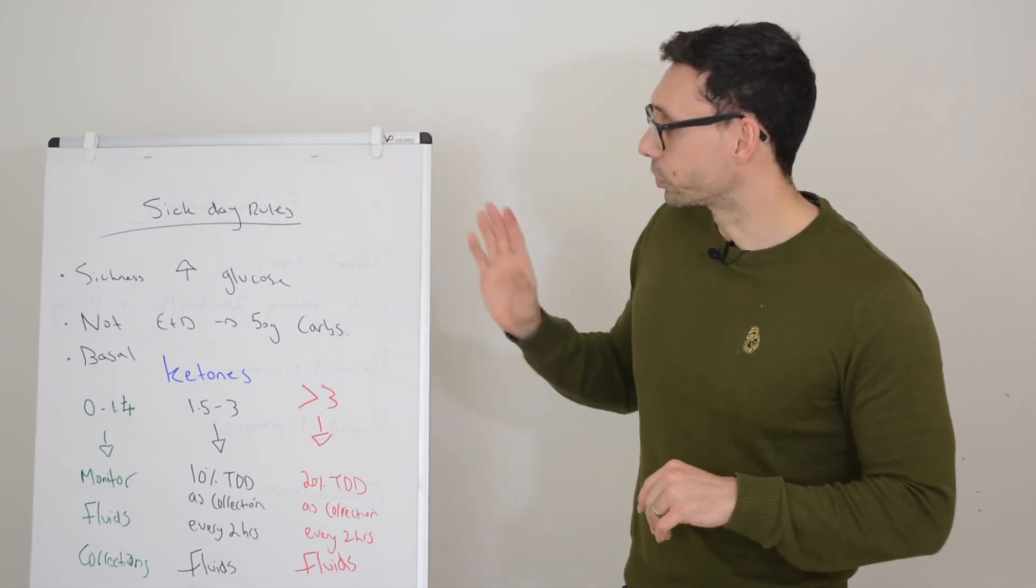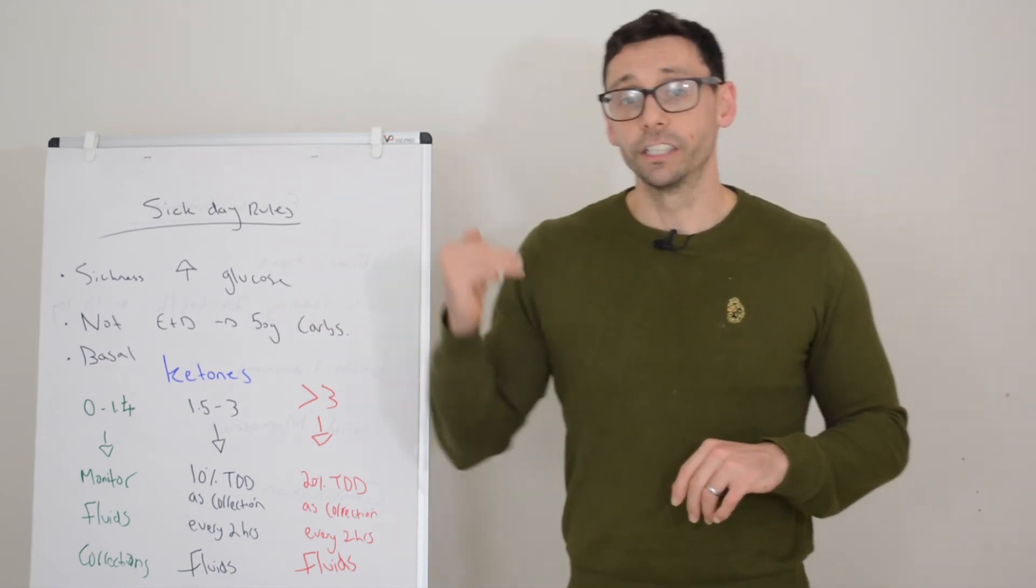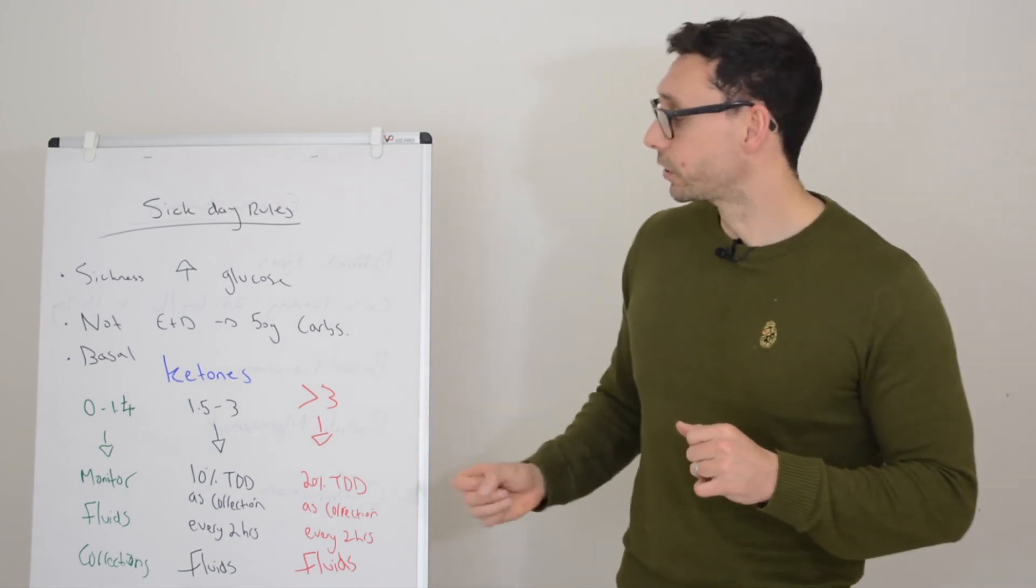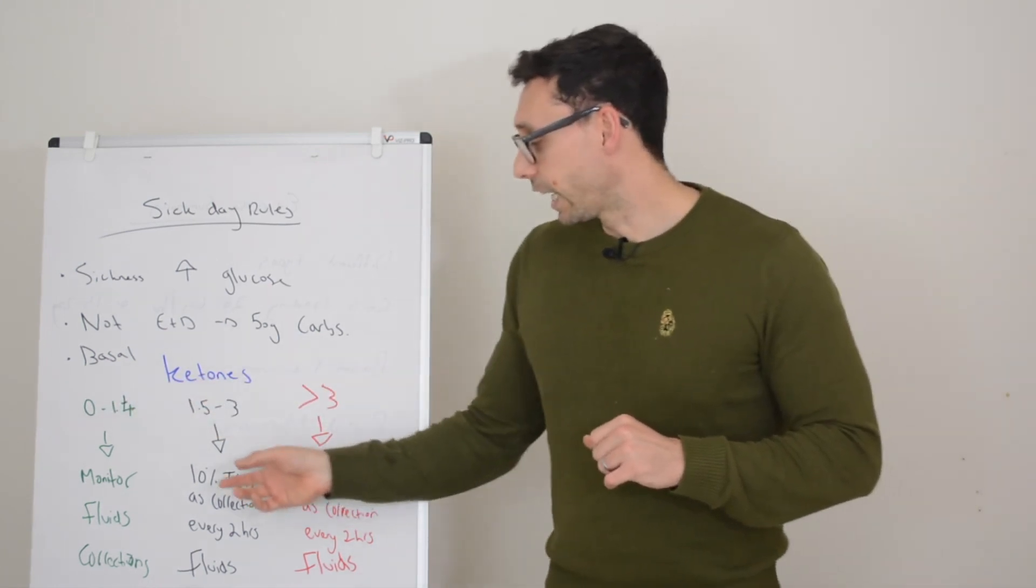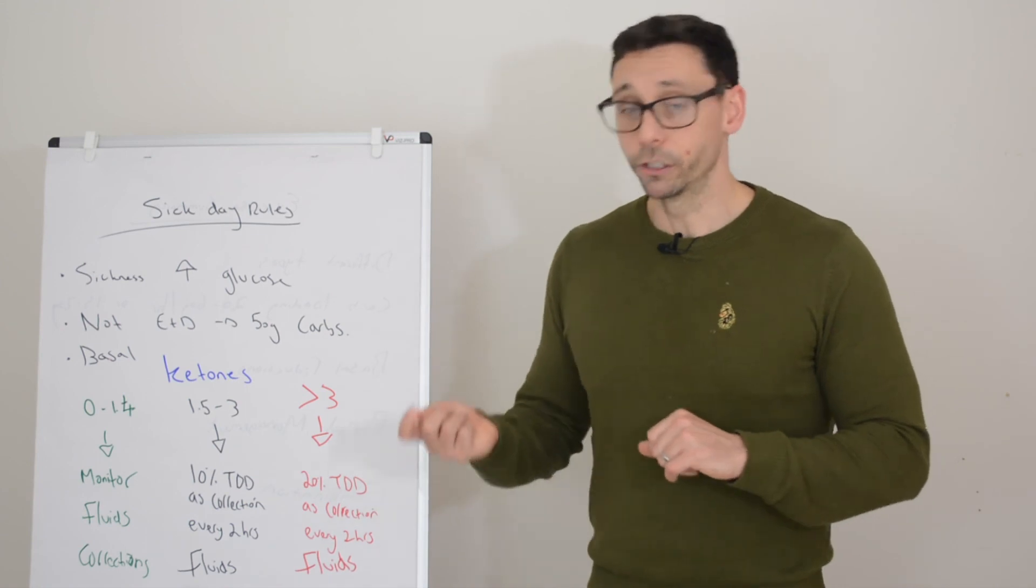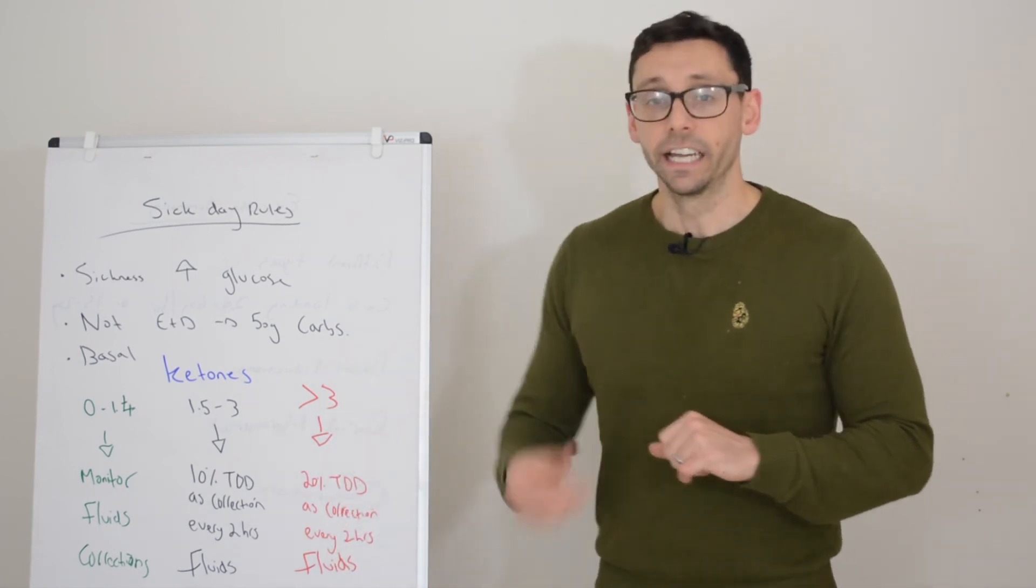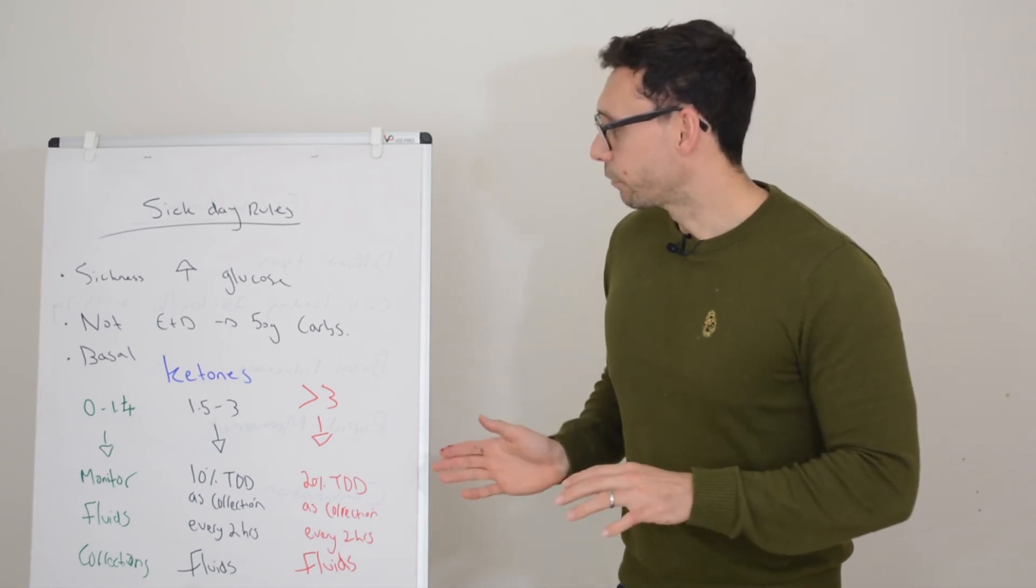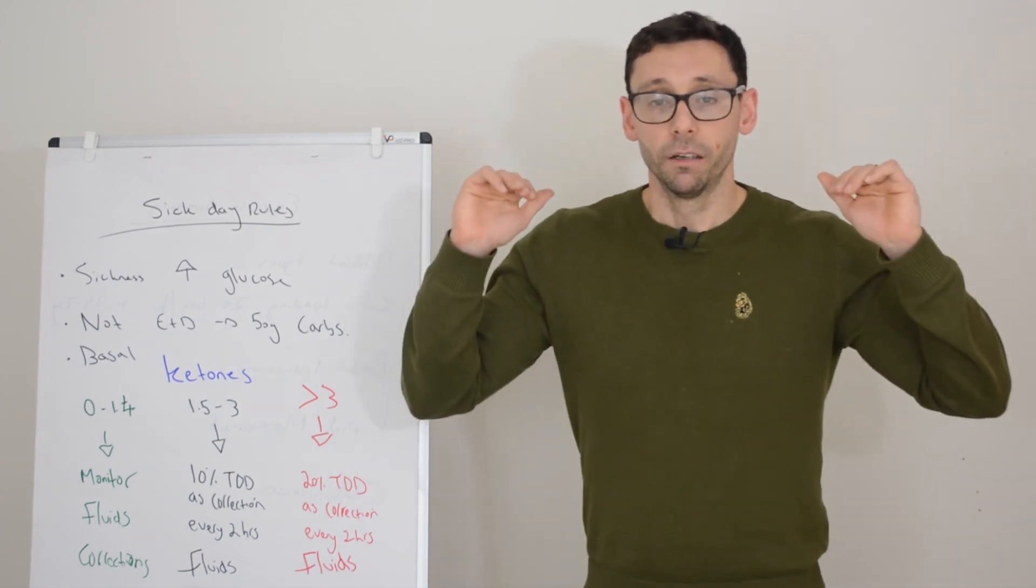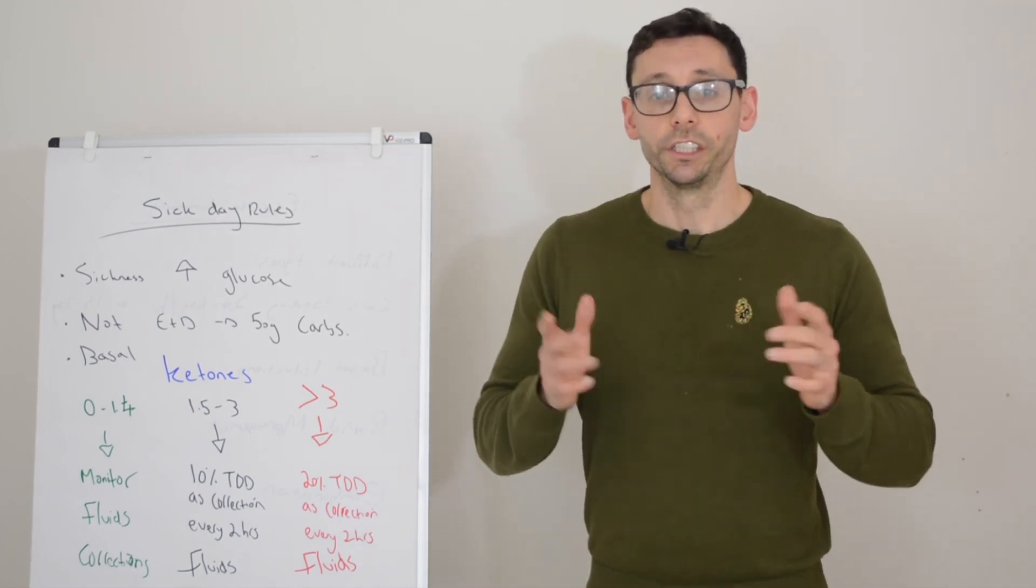So that's sick day rules. Just to summarize, you might need to increase your background insulin. Pump users have more flexibility. 50 grams of carbohydrates to stop any nutritional ketones happening. So you're not getting a double whammy of sick day ketones and nutritional ketones. Then you have your different categories. You need to take extra corrections if you're in the medium or high ketone category. Keep monitoring both your glucose and your ketone levels. And if you are struggling to get it under control and you're feeling sick, vomiting, back pain, then call for additional help. So I think that kind of covers it guys. So we'll leave it there for sick day rules. This is all in our downloadable plan in the members area. So you can read it and re-engage with it there or re-watch the video if you need to. So we'll see you at the next lesson and I'll see you later.